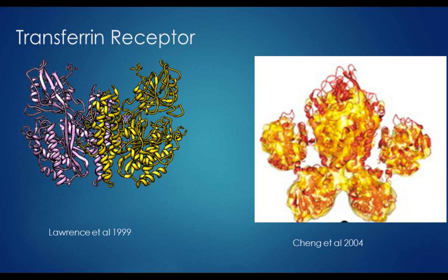There's also some information on the transferrin receptor itself. Martin Lawrence solved the crystal structure of human TFR shown on the left, and it's made up of three basic domains. At the top, it has an overall butterfly shape. The tips of the butterfly wings, that's the apical domain, and we know that's the portion that binds to the virus capsid. Then there's a center domain where you see the two wings wrapped together to make this butterfly shape, and that's a very stable structure.